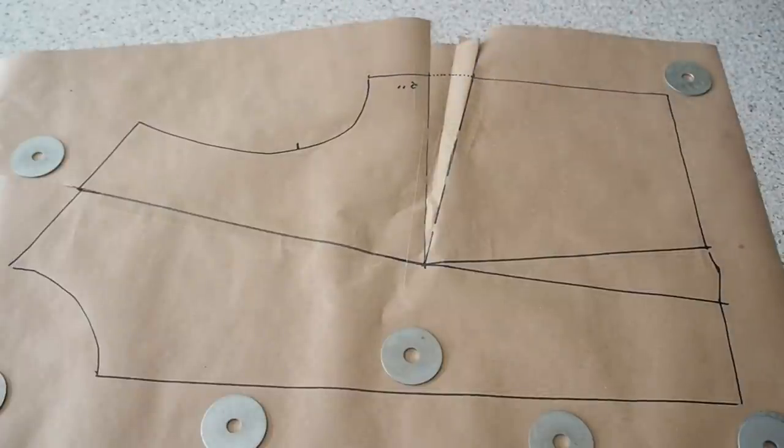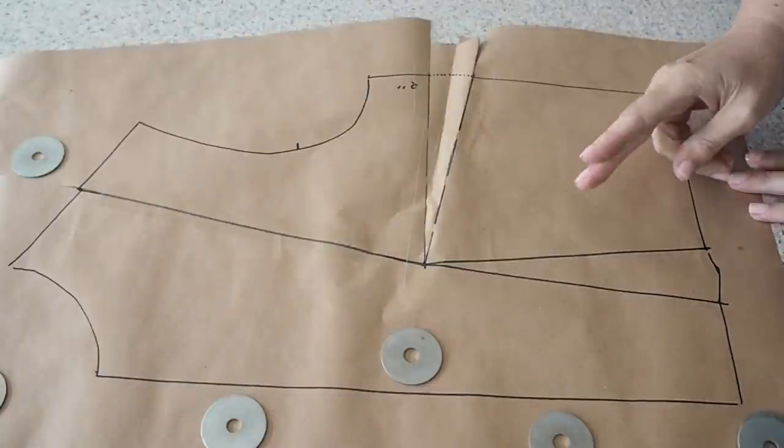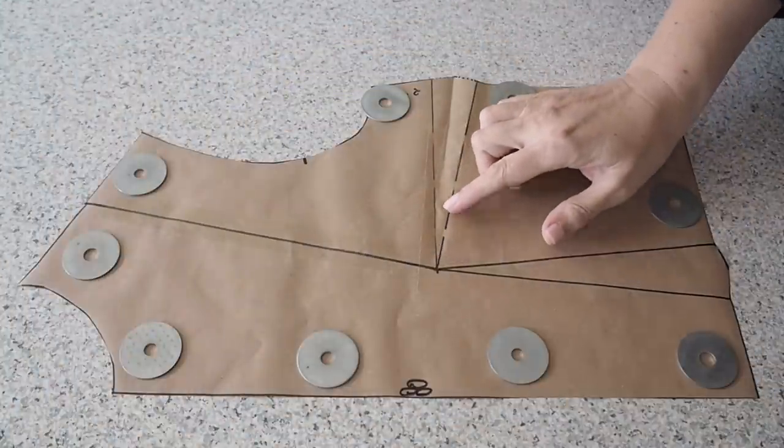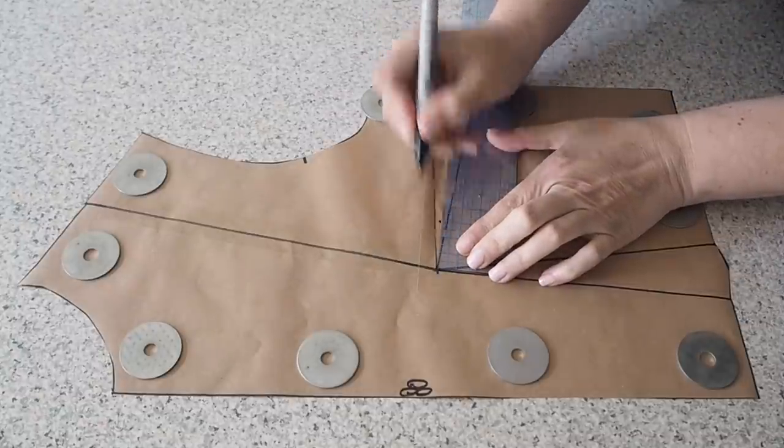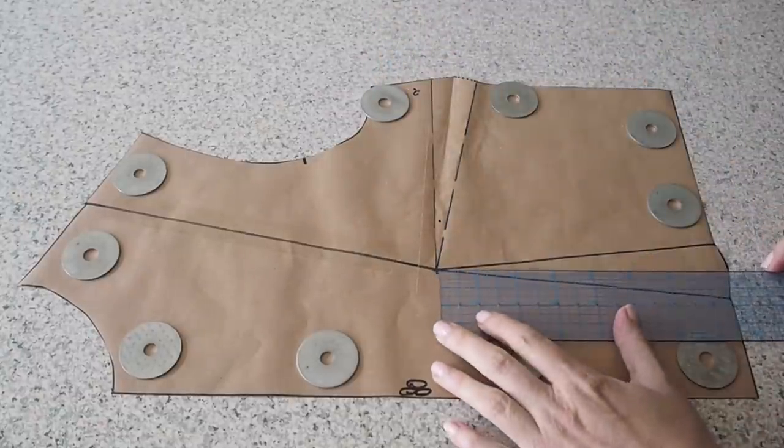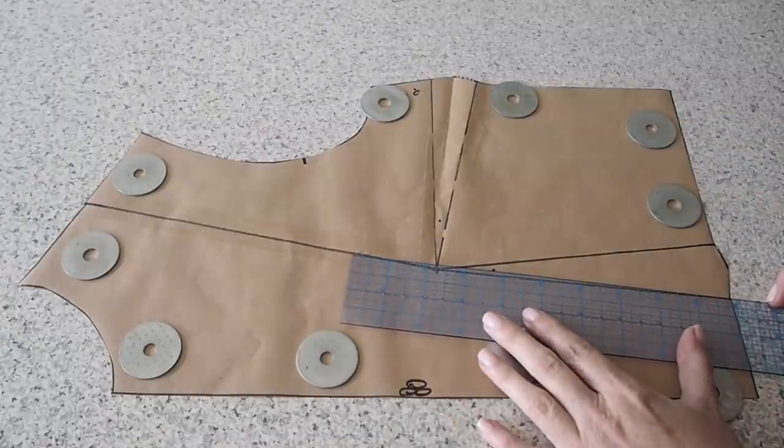And now that that's done, I'm ready to cut out my pattern. And then the last thing I have to do is just to reduce the length of my darts. So I'm measuring from the apex down the darts, about an inch and a half, giving myself a little dot and drawing in my new dart legs.